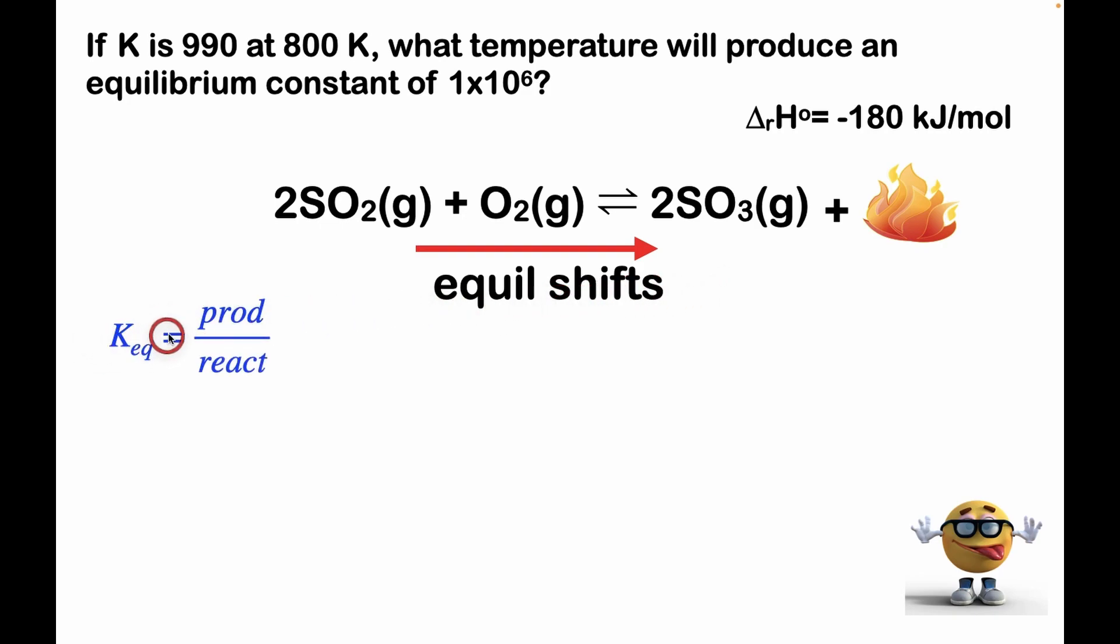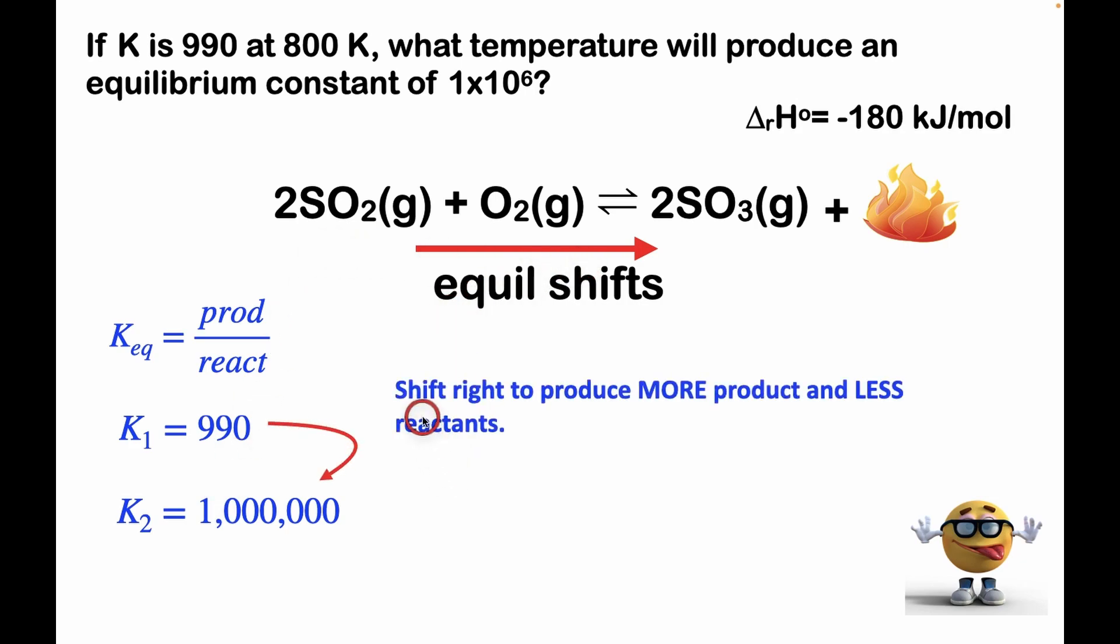Well, the equilibrium constant is a ratio of the activities of the products over the reactants, and K1 is 990. K2 is a million. In order for K2 to be larger, we need more products and less reactants, so we're going to shift this equilibrium to the right, as we say there. So this is Le Chatelier's principle in action. We shift to the right to produce more energy when less energy is available due to lower temperature.